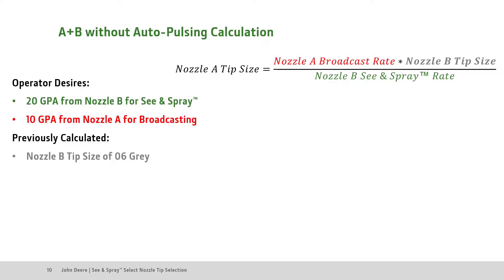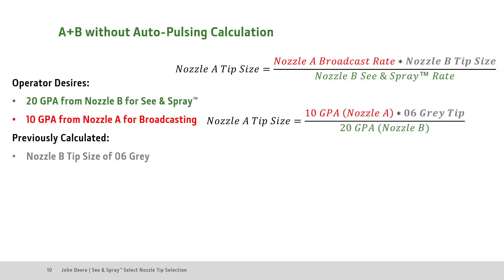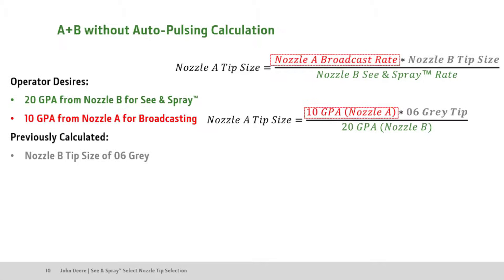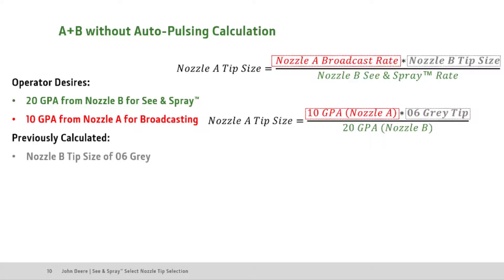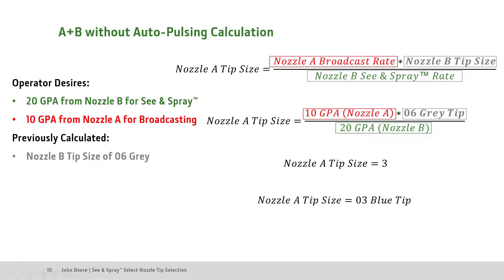To calculate our Nozzle A tip size, take the Nozzle A broadcast rate of 10 gallons per acre and divide that by our Nozzle B See & Spray rate of 20 gallons per acre. Then multiply that by our previously calculated Nozzle B tip size of 06. This equates to a Nozzle A tip size of 03, which is a blue tip.